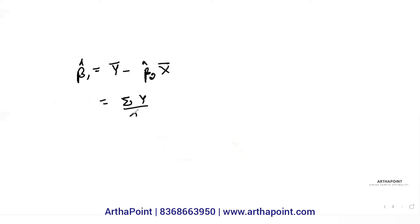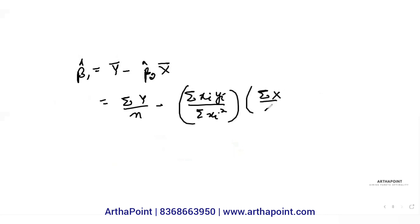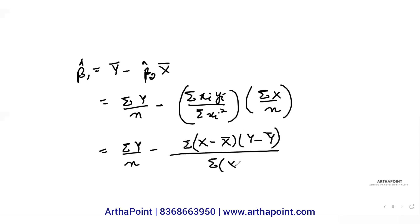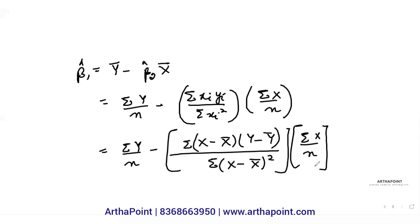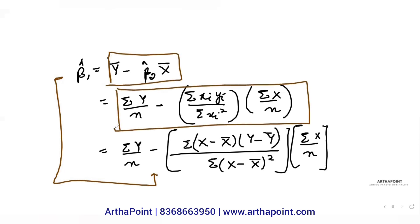Expanding further: beta 1 hat = Σy/n minus [Σ(x minus x̄)(y minus ȳ) / Σ(x minus x̄)²] · Σx/n. This is another way of representing beta 1 hat. In an exam, you can be given any of these forms, so you should know that these are all equivalent and synonymous with each other. Thank you.